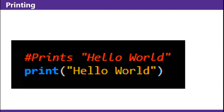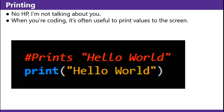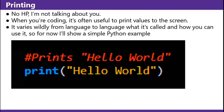Printing — when you're coding, it's often useful to print values to the screen. It varies wildly from language to language what it's called and how you can use it. For now, here's a simple Python example that just prints 'hello world' to the screen.